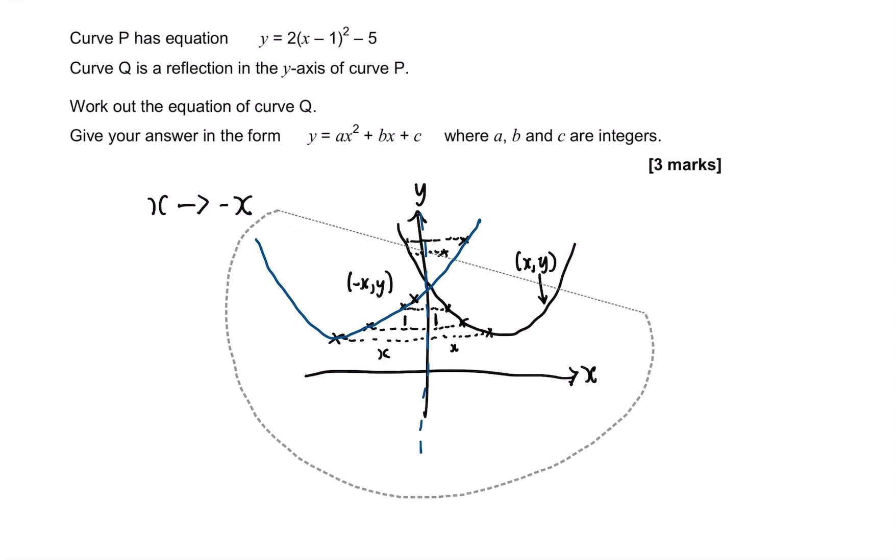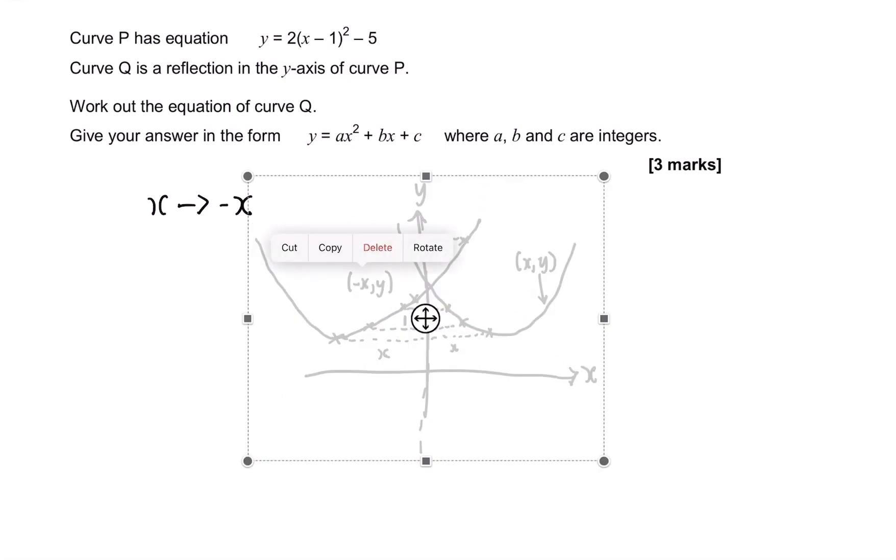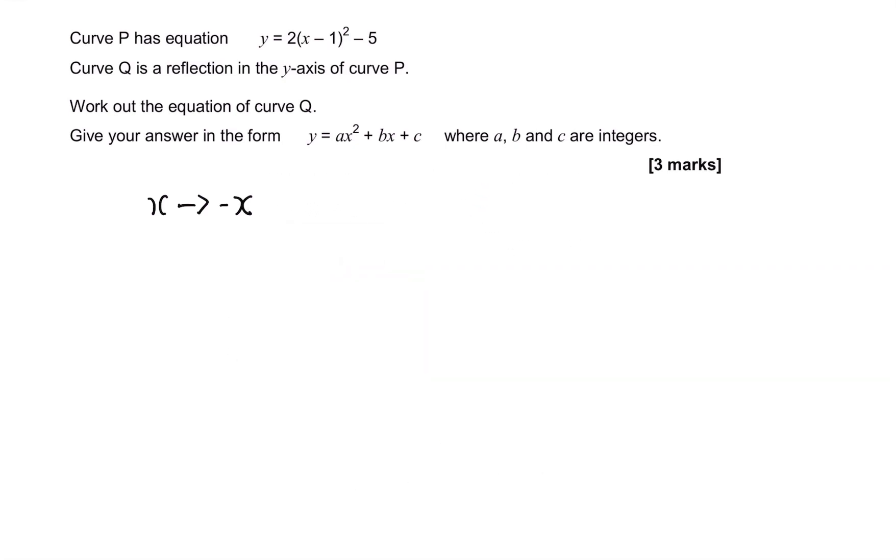Now that we know what this does, to get the equation of Q, all we need to do is replace the x with minus x. So we have y equals 2 lots of minus x minus 1 all squared minus 5.